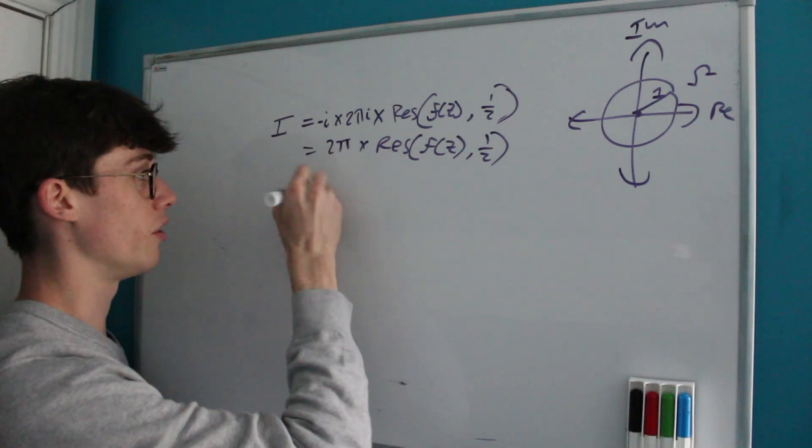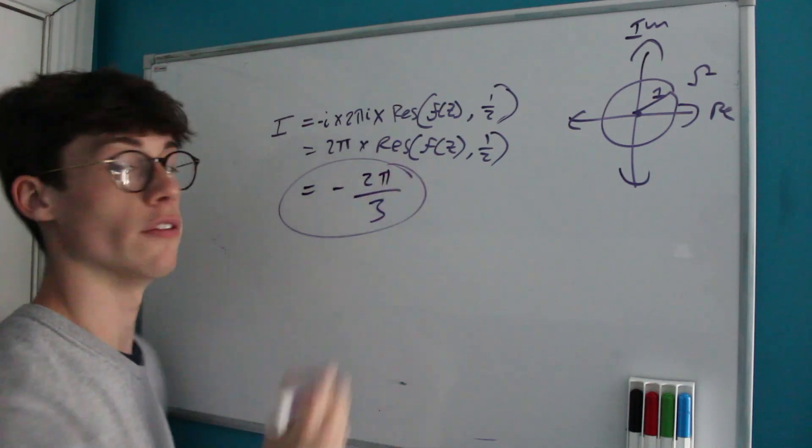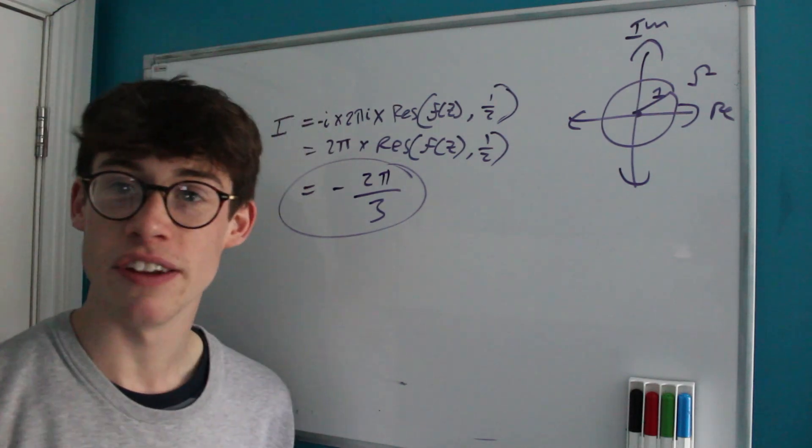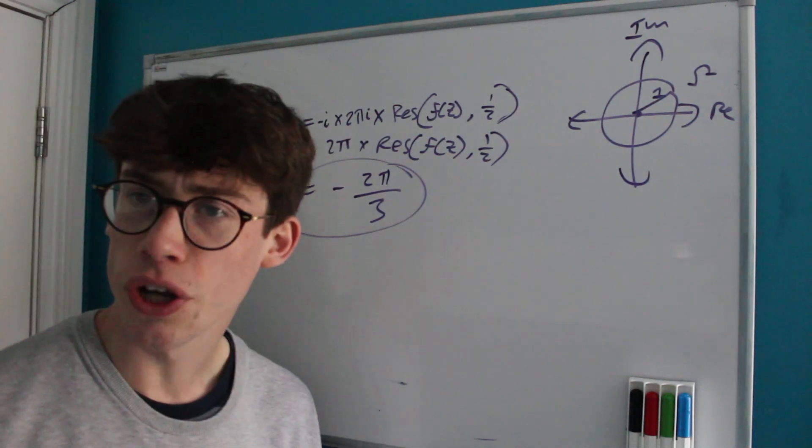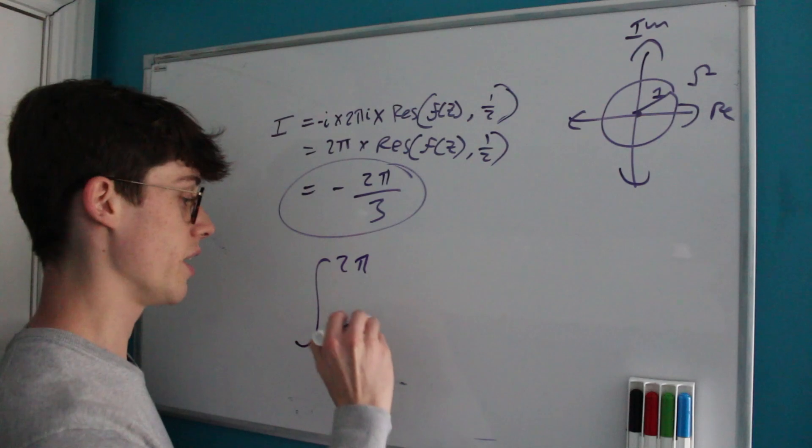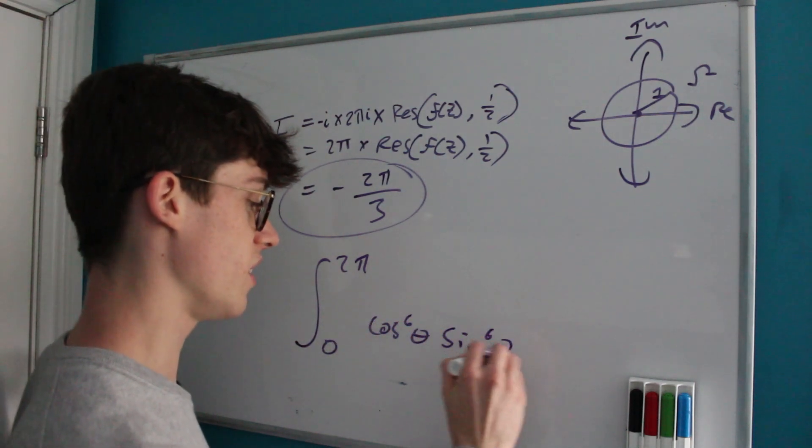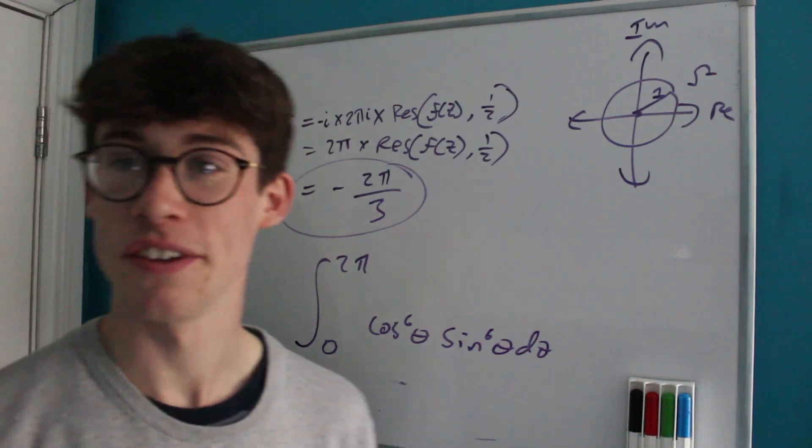And we've just got to return to our original integral, which tells us that it's 2π multiplied by this residue, which means that our integral as a whole must evaluate to negative 2π over 3. Thanks for watching guys, I hope you enjoyed this video, and if you'd like a challenge, why don't you try using the same method, doing the integral from 0 to 2π of cos to the 6th θ times sine to the 6th θ with respect to θ. Thanks for watching everyone, and I'll see you soon. Bye.